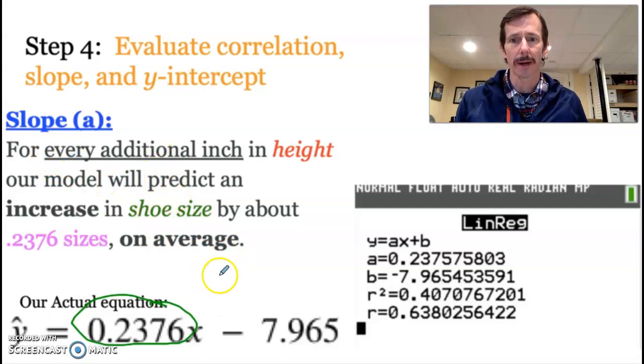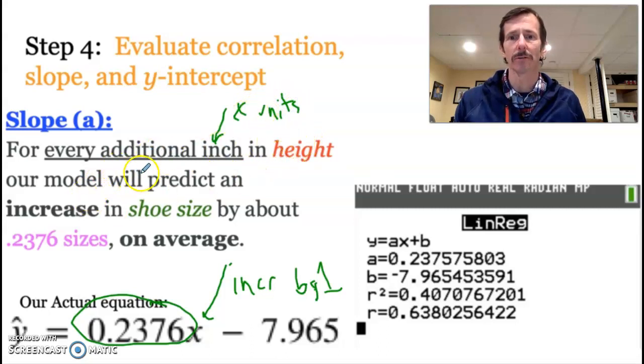So we talk about it by increasing whatever this is by one unit. So if we increase that by one, what happens is my output will be increased by this amount. So that's why this wording says for every additional inch, this is my units for my x value. Those are my x units. So for every additional inch in height, our model will predict an increase because it is a positive slope in shoe size by about 0.2376 sizes on average.